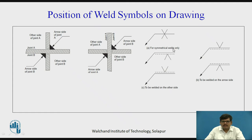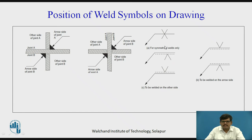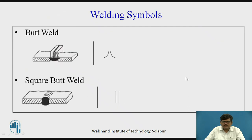For symmetric welding, the welding symbol is represented on both sides — above the reference line and below the reference line. When welding is to be done on the other side, the welding symbol is represented on the dotted line. When welding is on the arrow side, the symbol is shown on the continuous horizontal line. When you have symmetrical welding on both sides, both symbols are shown.